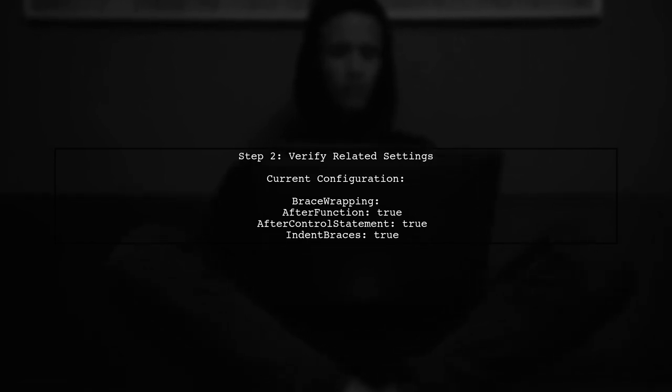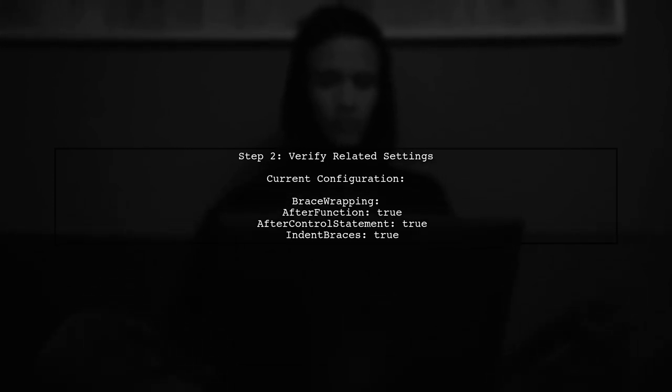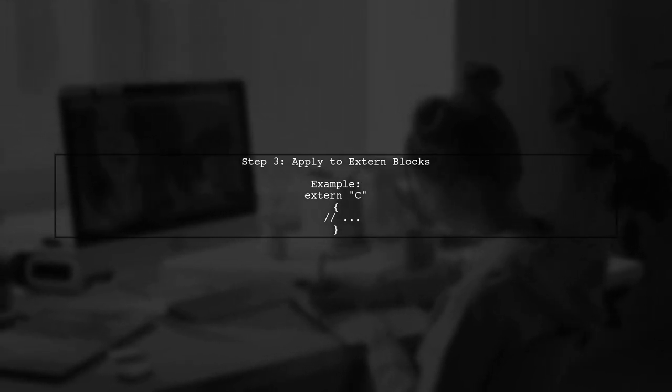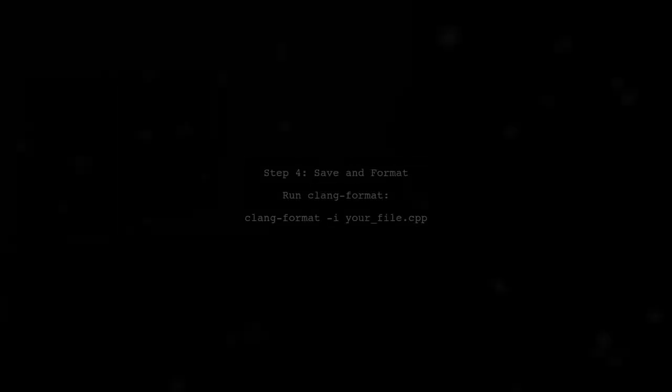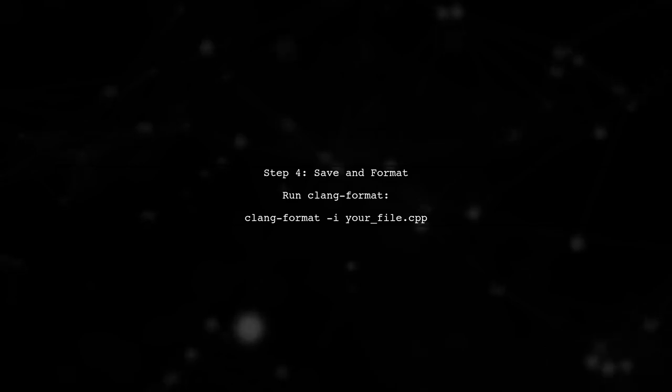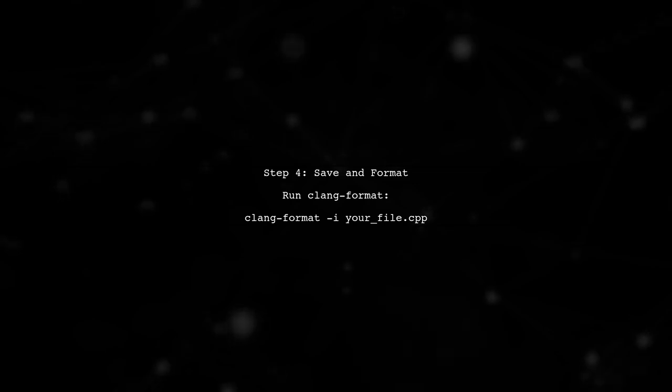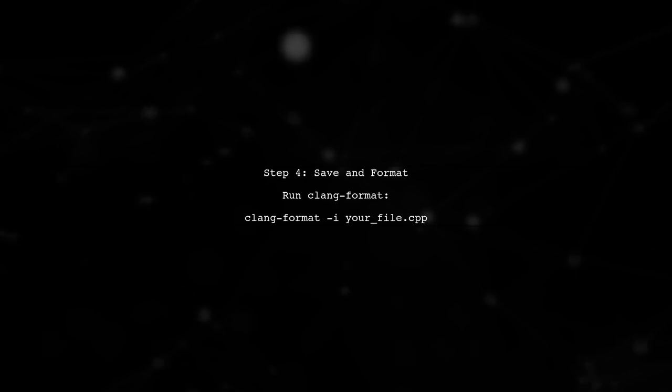However, ensure that other related settings are also correctly configured. Now, let's apply the same formatting style to extern blocks. You can achieve this by ensuring that the break before braces setting is applied universally. After making these changes, save your .clang-format file and run Clang Format on your code. This should format your Lambda functions and extern blocks as desired.